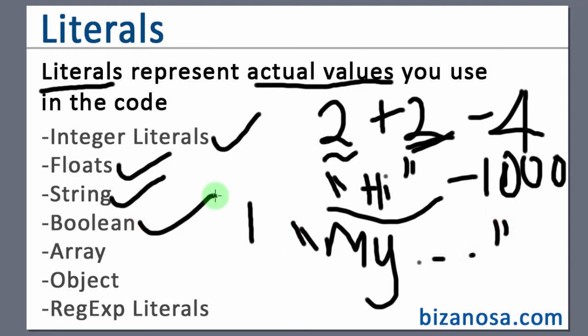Then we have booleans. Booleans only have two possible values. And these two possible values are either true or false.